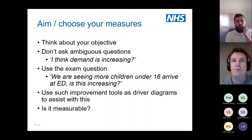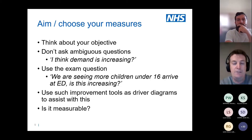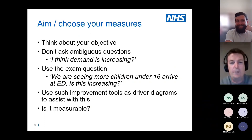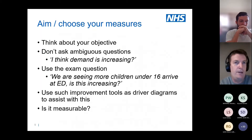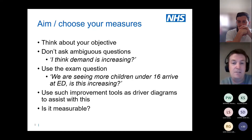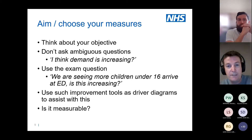One example: 'I think demand is increasing.' If you have such an ambiguous question, you're going to get an ambiguous response. From my degree days, I remember the shotgun versus rifle approach from marketing, which you can apply to many situations. If I fire a shotgun from 10 meters, some pellets might hit the target and some might not. But if I use a rifle, I can target exactly what I'm trying to hit. Similarly with our objectives: what is it we are specifically trying to achieve?